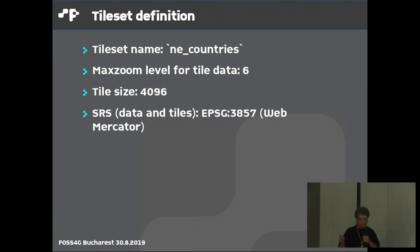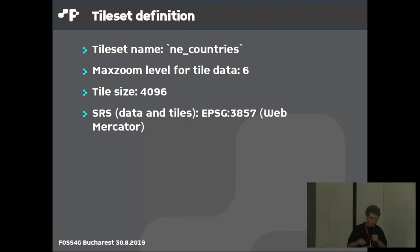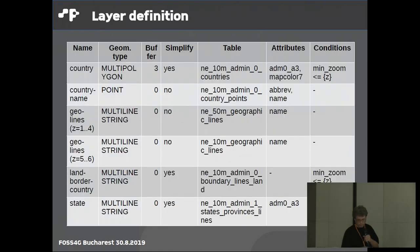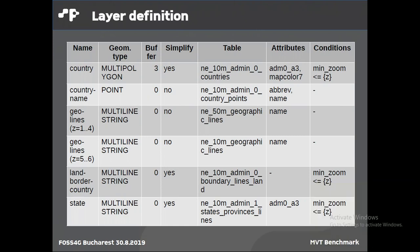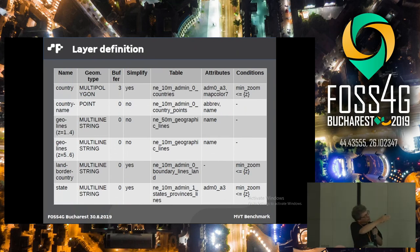We defined the tileset, gave it a name, and said we go to zoom level 6, which is not that much but it's enough for our benchmark. We defined the tile size and we stay in WebMercator. We defined the layers we need: a country layer, names, some lines, land, border, and state. This was chosen to have all geometry types included.